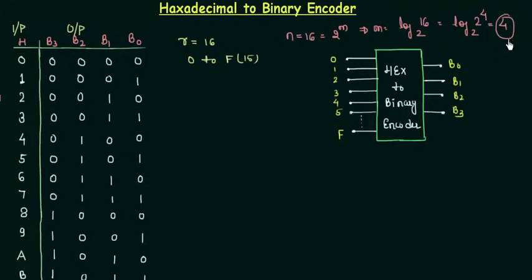So there are 4 outputs because m is your output and the 4 outputs is the bits from B0 to B3 and we require 4 bits to represent a single hexadecimal number.